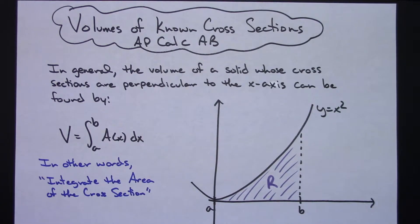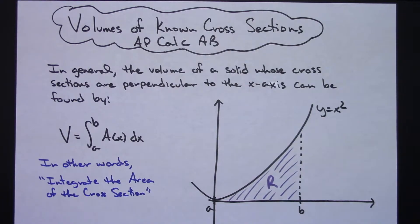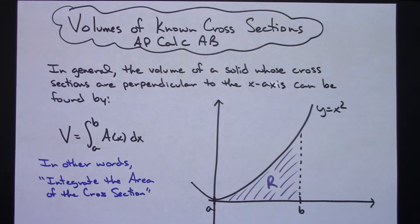In this video I'm going to be taking a look at volumes of known cross sections. This is a pretty common thing that is tested on the AP Calc AB test. It's generally in the free response section and it's probably going to be like part D of one of the free response questions.